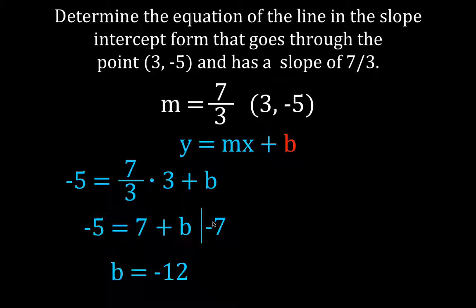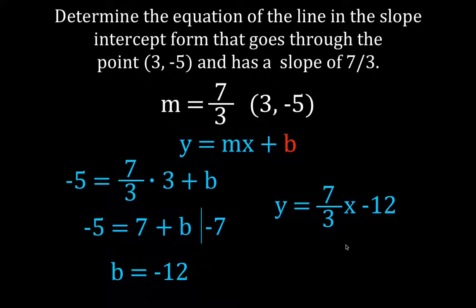Now we know the slope is 7 thirds and b is minus 12, so the equation of the line is y equals 7 thirds x minus 12. That's the equation of the line with slope 7 thirds that goes through the point (3, minus 5).